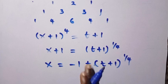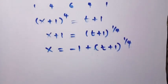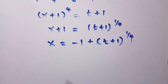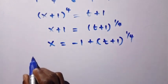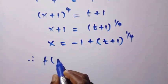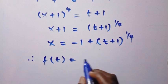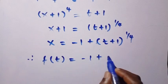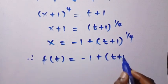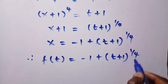We've made x the subject. Coming back to the original function, we let f(t) = x. And x is now -1 + (t + 1)^(1/4).